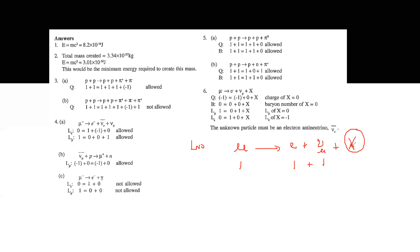The lepton number of particle X should be minus one, so this particle must have charge zero, baryon number zero, and lepton number minus one. The anti-electron neutrino has all of these properties — charge zero, baryon number zero, and lepton number minus one. So the particle released here is actually the anti-electron neutrino.